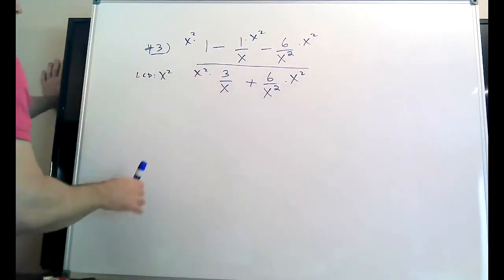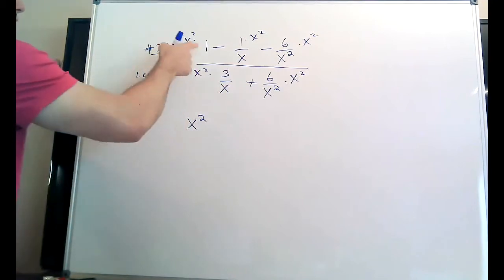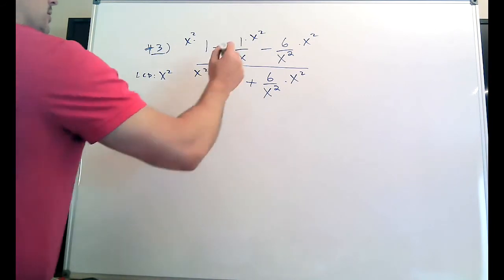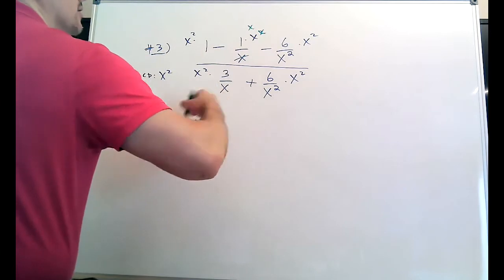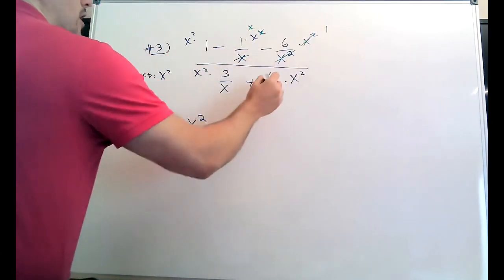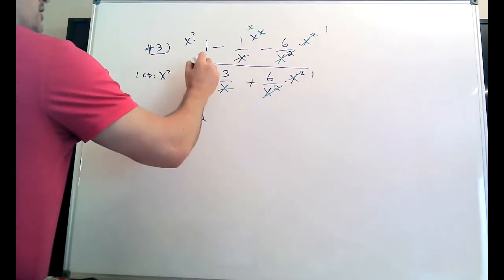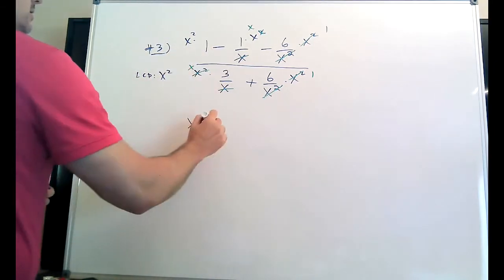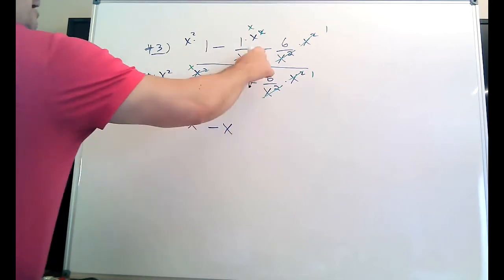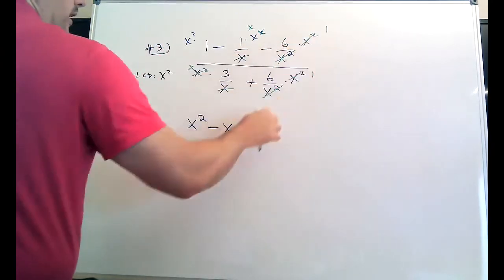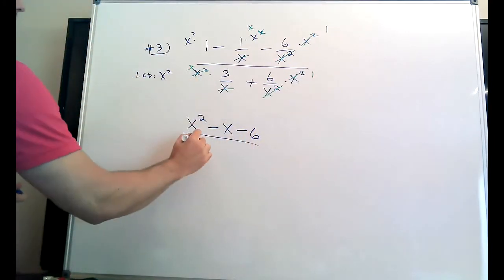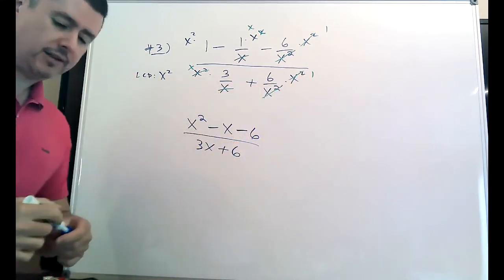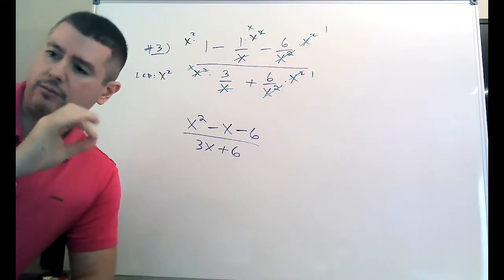X squared times one is X squared — there's nothing to cross out here. Then I cross out the rest. X crosses out one of those and you're left with X. Those X squareds cross out totally. Those X squareds cross out totally. And this one crosses out and leaves you with an X. So I have X squared times one, minus X times one, minus six times one over three times X plus six times one.